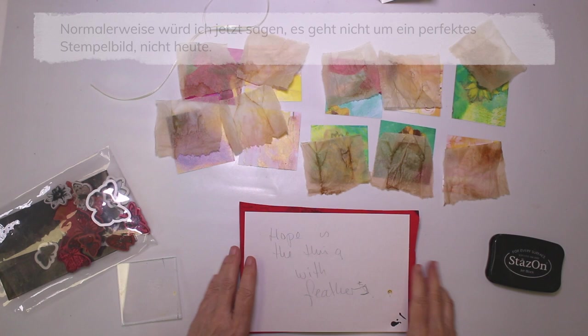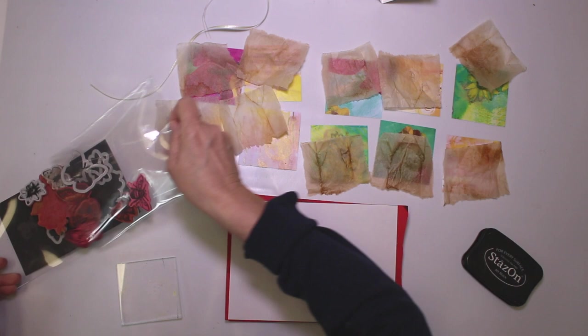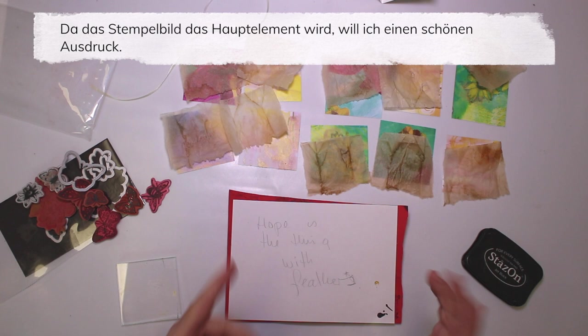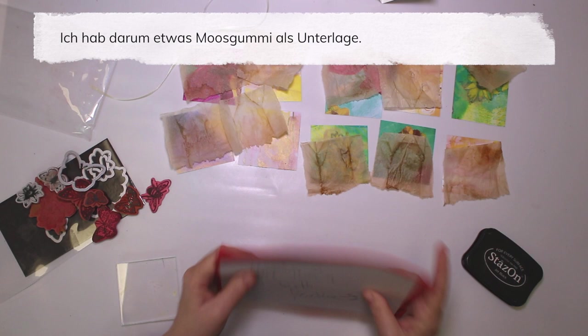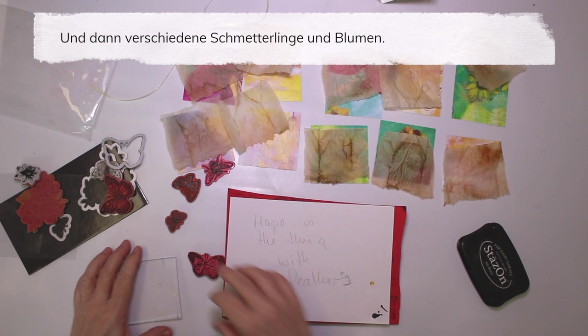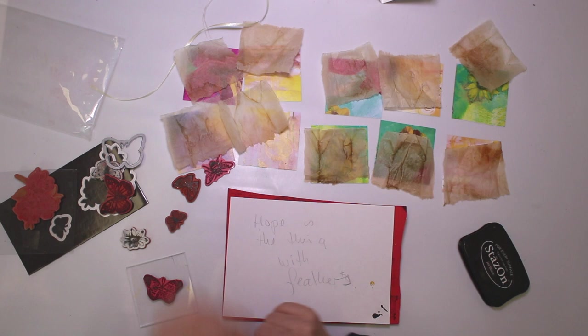Okay, usually you hear me say it's not about perfection, I don't want a perfect impression. This time, because it is the focal point, I really want a perfect impression. So I have grabbed some fun foam pieces. Some people call it Eva sheet. And I have all kinds of butterflies. I'm not sure about the flowers. Maybe not. And certainly not the bee. Just butterflies.